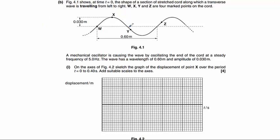Part B shows us a wave, the side view of a vibrating cord at one snapshot in time. It tells us the frequency is 5 hertz and gives the wavelength and amplitude as well. For part i, we're asked to sketch a graph of displacement of point x between time 0 and 0.40 seconds, and we need to add suitable scales to the axes.